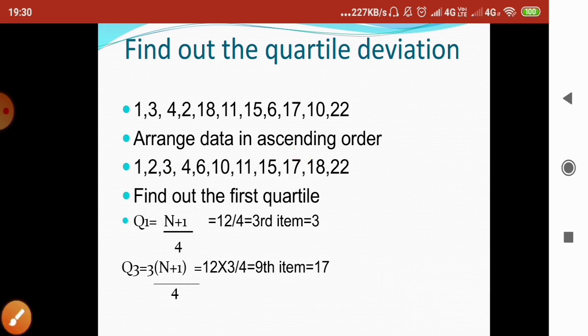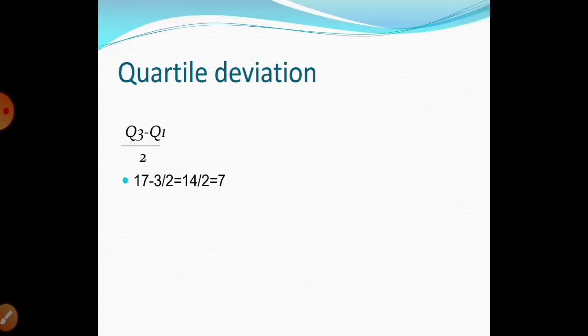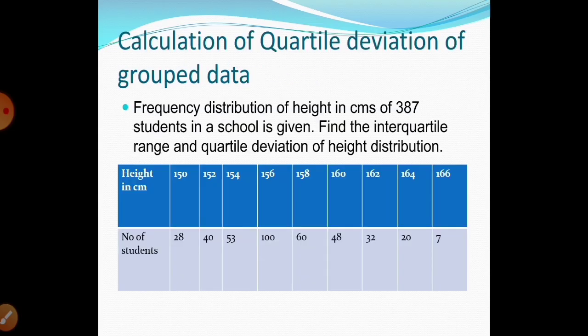So 17 is the ninth item. The quartile deviation is (17 minus 3) divided by 2, which equals 7. This was about discrete values. Now let us look at how to calculate quartile deviation for grouped data.